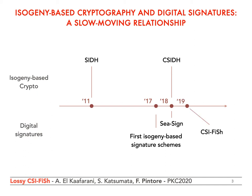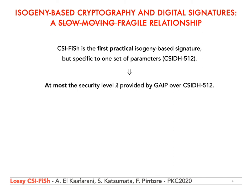Finally, last year, an improvement of SeaSign named SeaFish was proposed. SeaFish enjoys practical efficiency in both signing and verifying, while maintaining the short signature sizes offered by SeaSign. We can confidently affirm that SeaFish is the first practical isogeny-based signature, but this recent relationship between isogenies and signatures is fragile. Indeed, SeaFish is specific to one set of CSide parameters, namely CSide 512. Therefore, SeaFish can offer at most the same security provided by the hard mathematical problem GaIP over the CSide 512 parameters. GaIP is believed to have 128 bits of classical security, and at most 64 bits of quantum security.